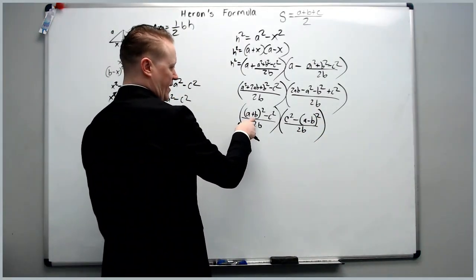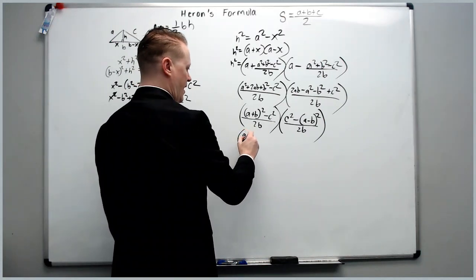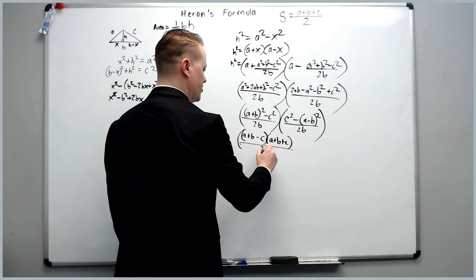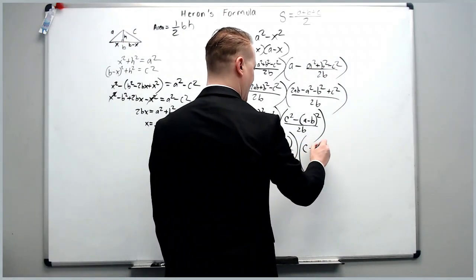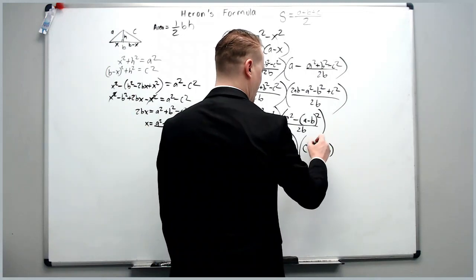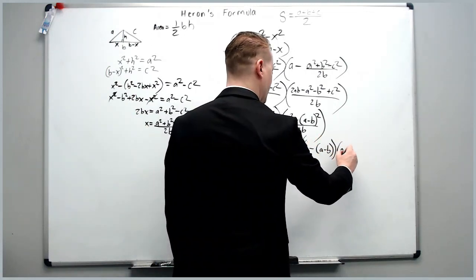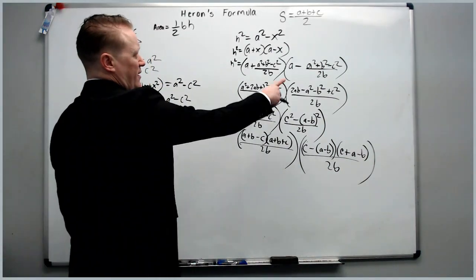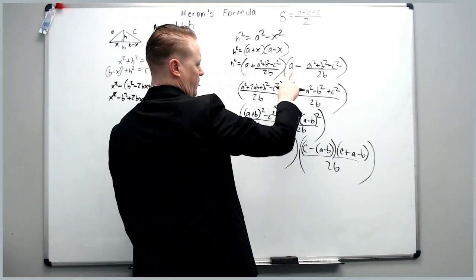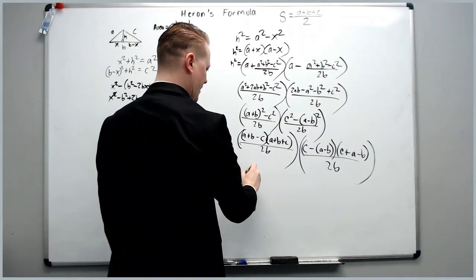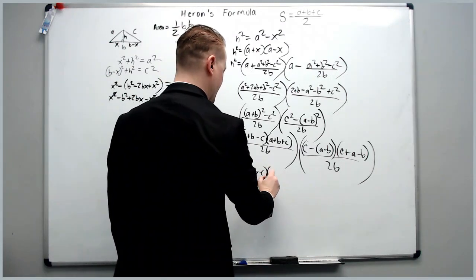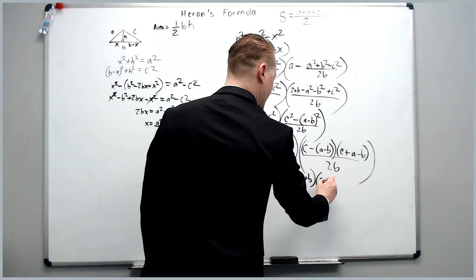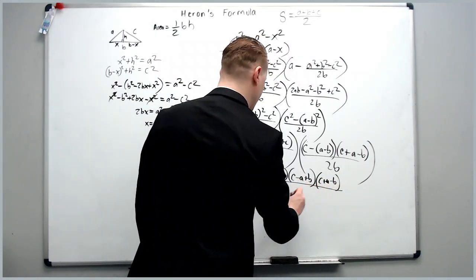Okay, then we're going to go ahead and use difference of squares again. So it's going to be A plus B minus C times A plus B plus C still over 2B and then we're going to have over here C minus A minus B and then C plus A minus B over 2B as well.